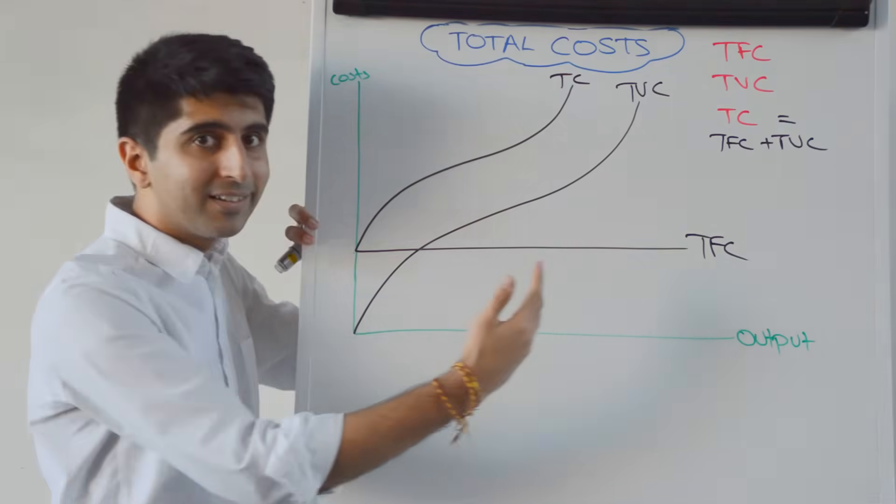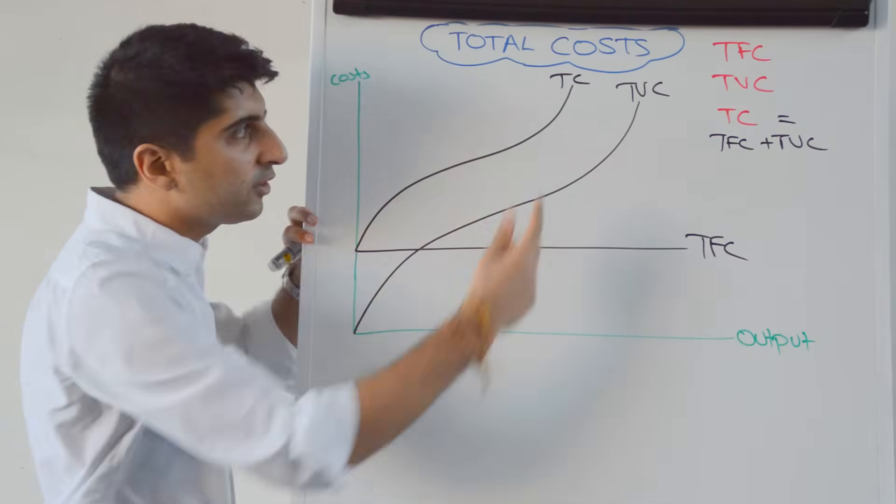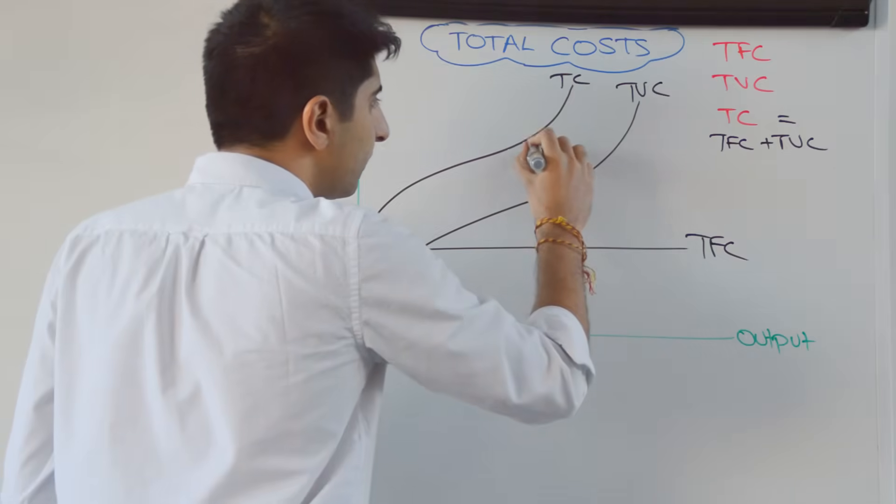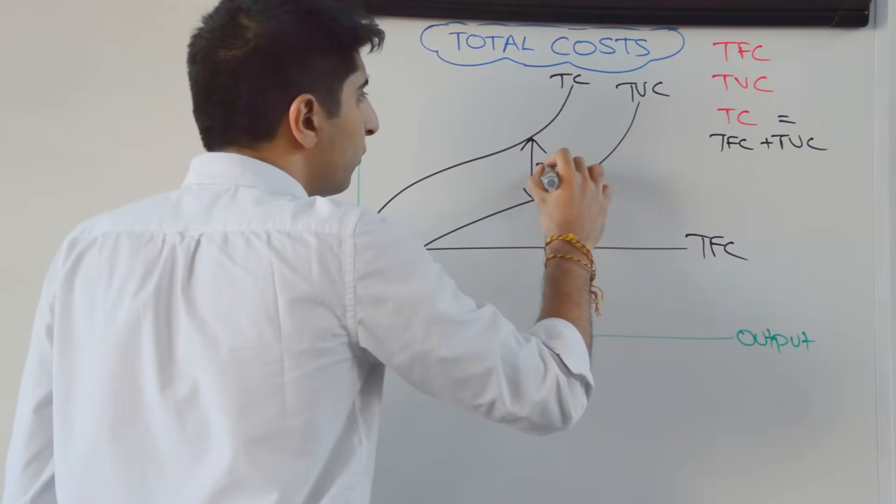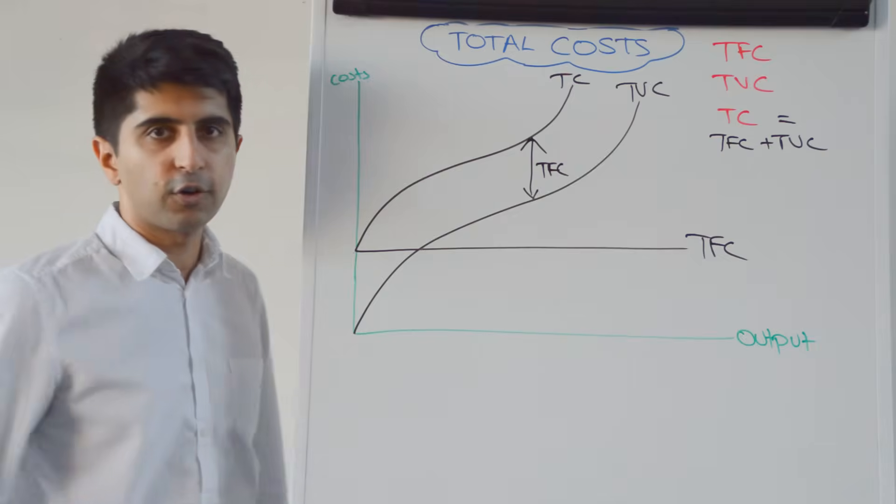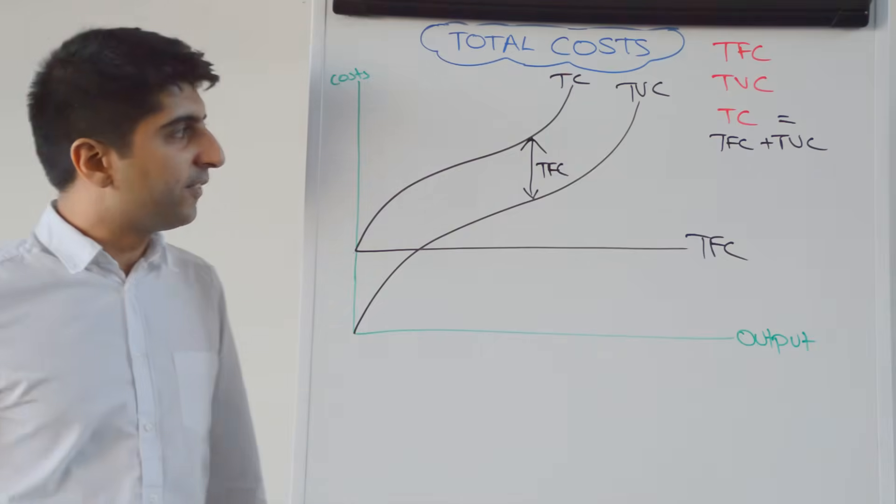But because TFC is constant, it's going to follow the exact shape of the total variable cost curve. And, of course, the vertical distance between the two curves represents the total fixed cost level. So, that has a value of fixed cost if we just look at the difference between them.